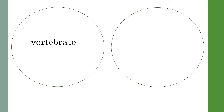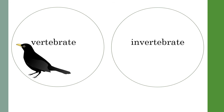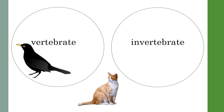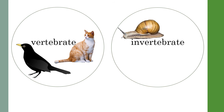Now let's classify these animals into two groups. Are they vertebrate animals, which means they do have a backbone? Or are they invertebrate animals, which means they do not have a backbone? Let's start with the blackbird. The blackbird is a vertebrate animal — it has a backbone. The cat is also a vertebrate animal. What about the snail? The snail does not have a backbone — it is an invertebrate animal.